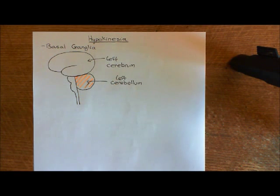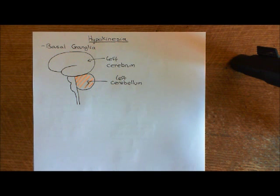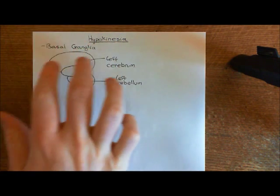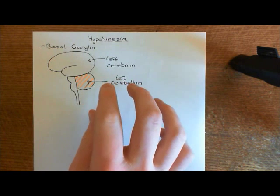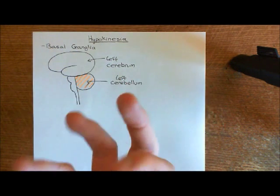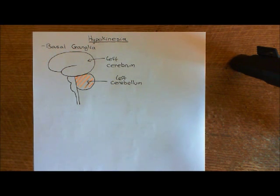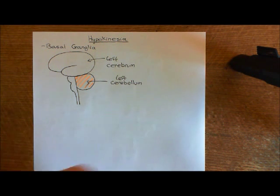The cerebellum is incredibly involved in movement, but we're not going to talk about it in this video because we're going to talk very much about the voluntary control of movement, which very much involves the basal ganglia and not so much the cerebellum. The cerebellum is more about calibrating extremely fine movements — for instance, when you're catching a ball, that requires extremely calibrated movements, and the cerebellum is believed to be very involved there.